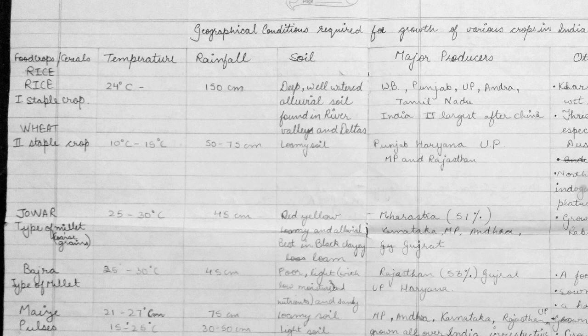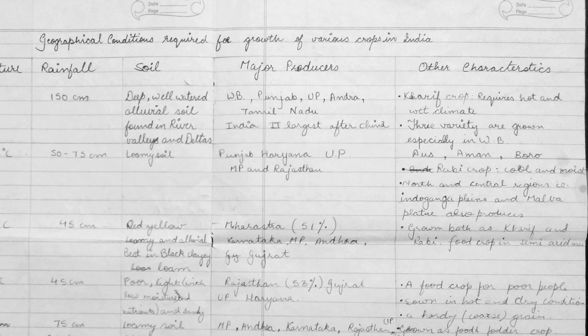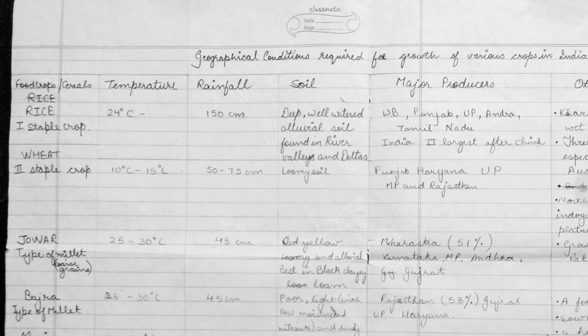Next is Jowar, a type of millet — millets are basically coarse grains. Temperature required is 25 to 30 degrees Celsius, rainfall 45 centimeters. Soil required is red, yellow, loamy, and alluvial — best in black clay loam soil. This is a very common exam question. Major producers are Maharashtra, Karnataka, MP, Andhra, and Gujarat. It is grown both as Kharif and Rabi and is a food crop in semi-arid areas.